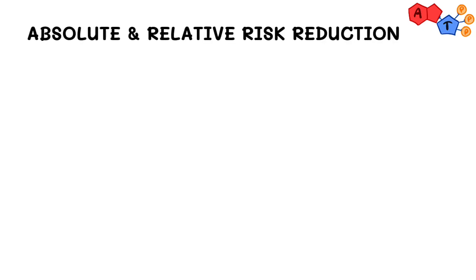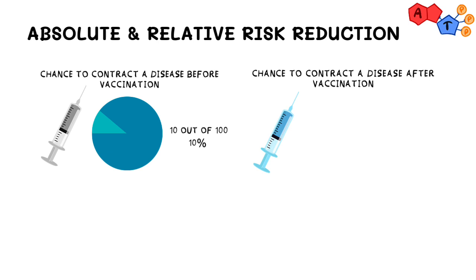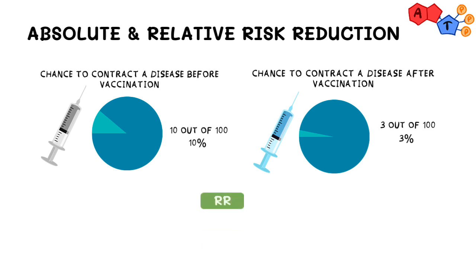We'll use the same example to explain them both. Suppose the chance for one to contract a contagious disease before vaccination is 10 out of 100, in other words 10%, and the chance for one to develop it after vaccination is 3 out of 100, or 3%. As a little reminder, can you guess whether relative risk here is greater than or less than 1? That's right — relative risk should be less than 1, since the intervention here is protective.